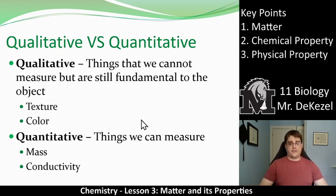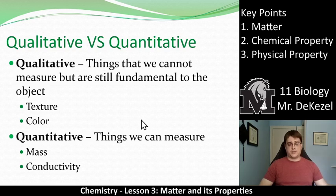Oxygen is an element, and we'll get more into elements later in the unit. They are substances that cannot be broken down. When we talk about properties of matter — things we can touch, feel, look at, and measure — there are two types. Qualitative properties are things you can describe but can't measure, like texture or color. Quantitative properties are things you can actually measure, like mass, conductivity, or volume — you can get a number out of them.